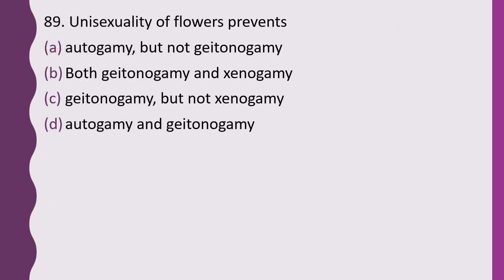Question 89. Unisexuality of the flowers prevents: autogamy but not geitonogamy; both geitonogamy and xenogamy; geitonogamy but not xenogamy; or autogamy and geitonogamy. The correct answer is option A — it prevents autogamy but does not prevent geitonogamy.